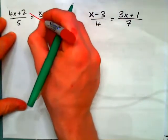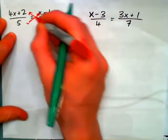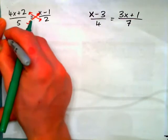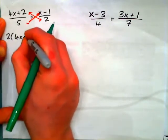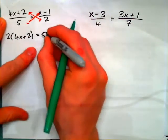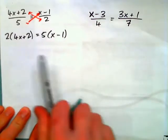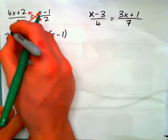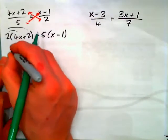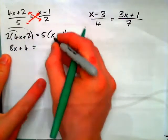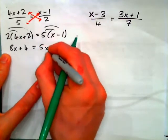Now let's try these examples. We can cross multiply on this one. And this time we have 2 times 4x plus 2 equals 5 times in parentheses x minus 1. Now we need to simplify both sides. So, apply the distributive property and get 8x plus 4 equals 5x minus 5.